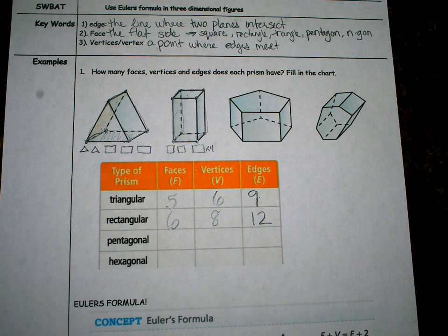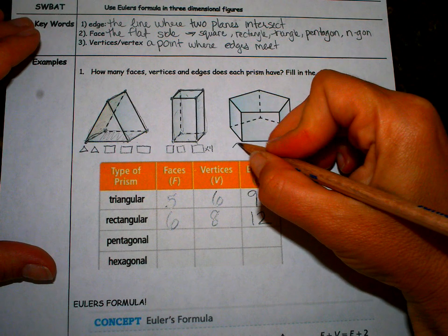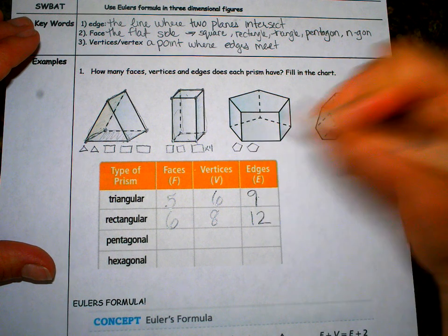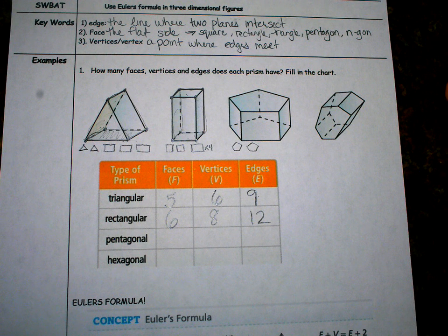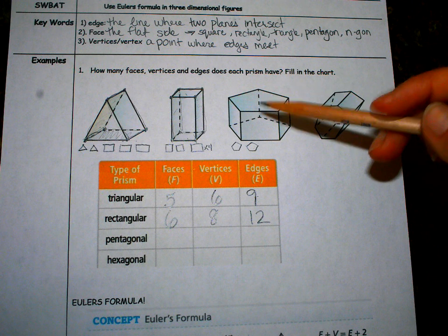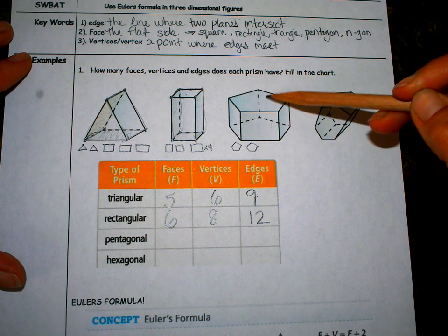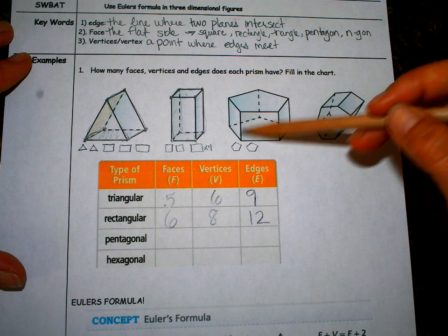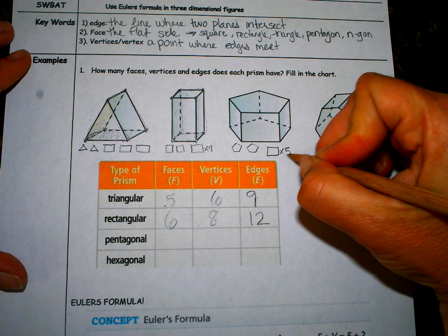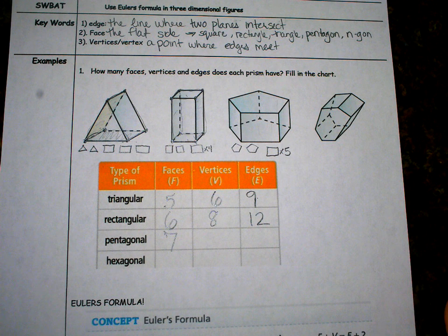Go to my pentagonal prism. In my pentagonal prism, my faces are going to be the top pentagon and bottom pentagon. Then I'm going to do all the rectangles that are along the side. Top pentagon, bottom pentagon, and then rectangles. Front, one, two, back, three, back, four, side, five. Two plus five. There's five rectangles. Seven faces.